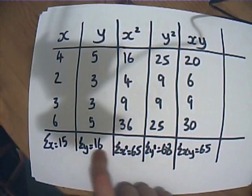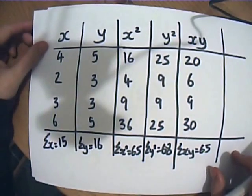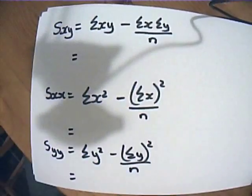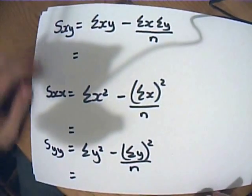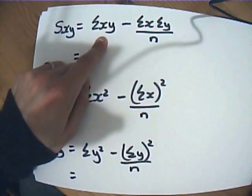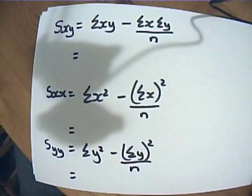So we have all the important statistics and totals that we need in order to find our product moment correlation coefficient. Let's remind ourselves of the formulae for s_xy, s_xx, and s_yy. And we're now just going to substitute in the values that we just calculated. So sum of xy, come back to this sheet, go to the xy column, the total for this was 65.